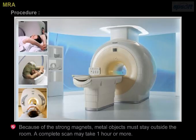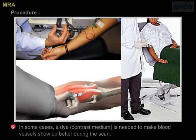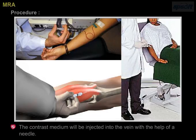Because of the strong magnets, metal objects must stay outside the room. A complete scan may take one hour or more. In some cases, a dye contrast medium is needed to make blood vessels show up better during the scan. The contrast medium will be injected into the vein with the help of a needle.